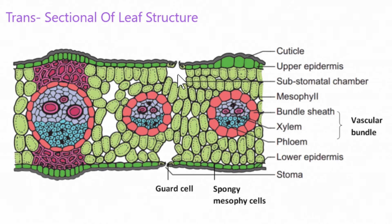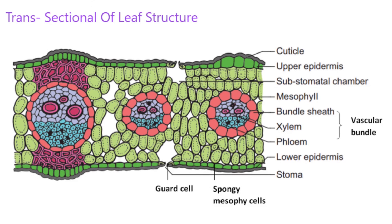Here, this is called a substomatal chamber. Now we know the leaf structure, ultimately.